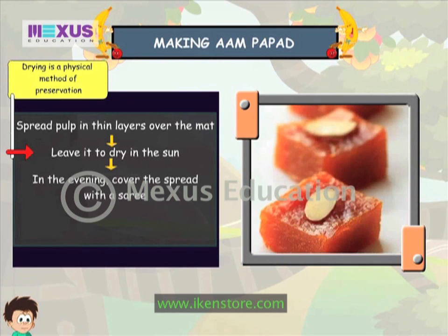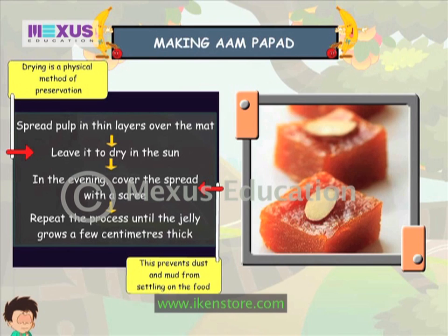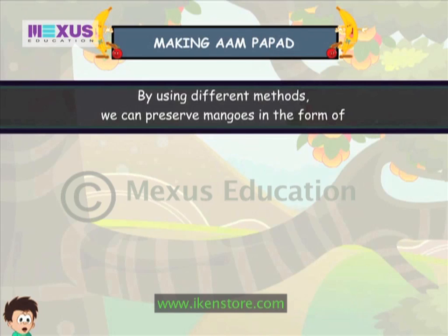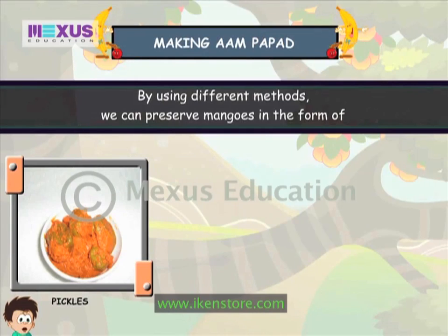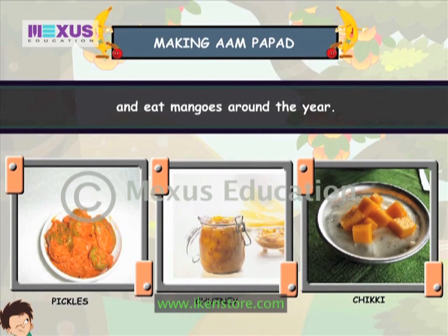In the evening, cover the spread with a saree. This prevents dust and mud from settling on the food. Repeat the process until the jelly grows a few centimetres thick. By using different methods, we can preserve mangoes in the form of pickles, chutney, chikki and eat mangoes around the year.